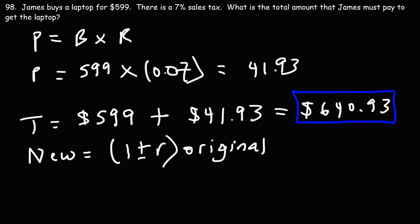So for sales tax, that's going to increase the price, so you would use positive R. For like a sales discount, where that would decrease the price, you would use negative R. In this problem, we're trying to find the new price. Since we're adding the sales tax, that's going to increase the price, so the new price is going to be greater than the original price. So we're going to use plus R. R is the 7% as a decimal, 0.07. The original price of the laptop is $599.